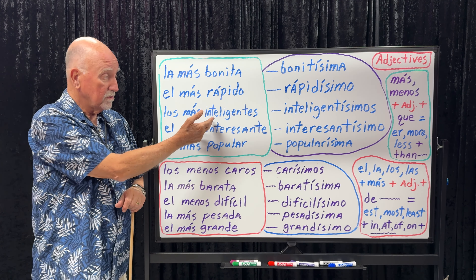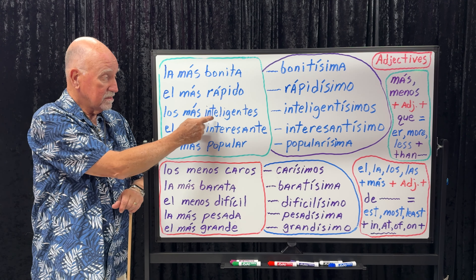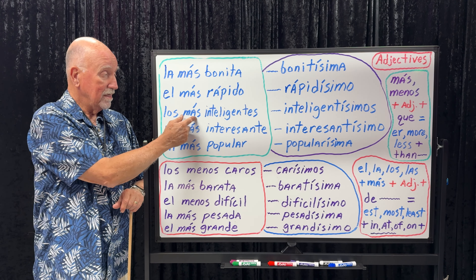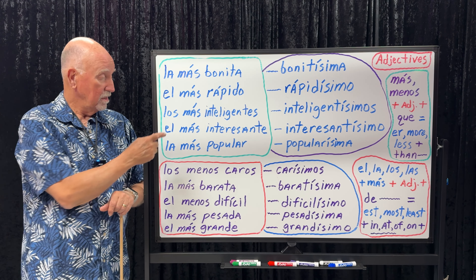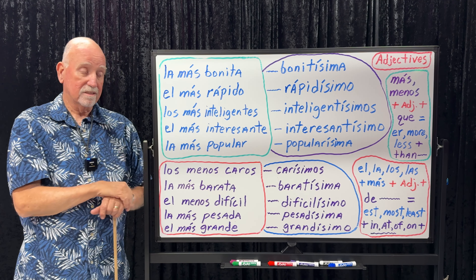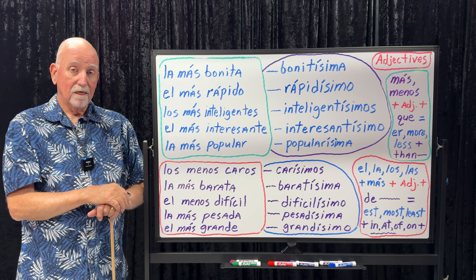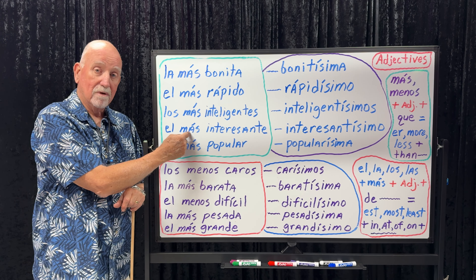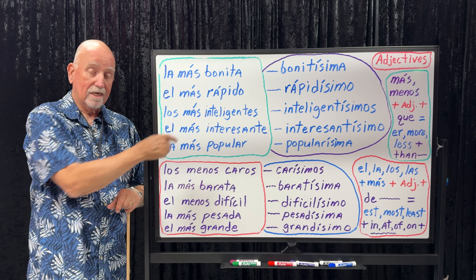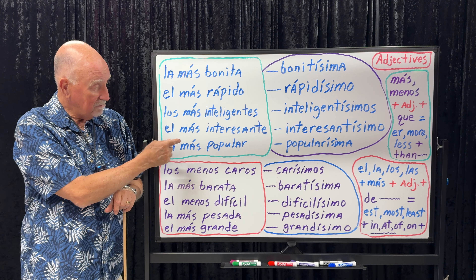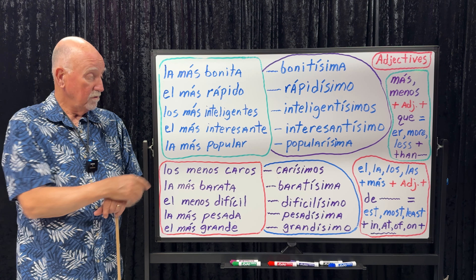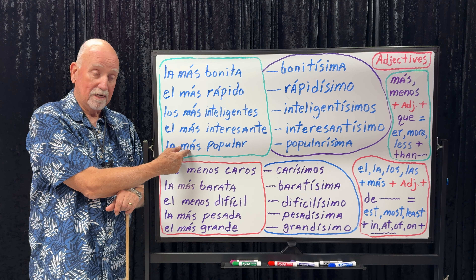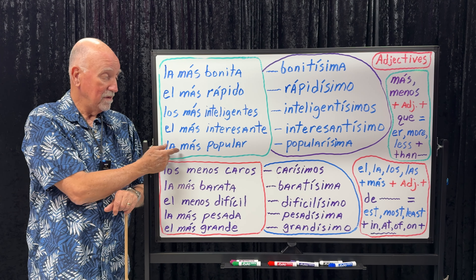If you want to say a group of people are smart: inteligentes. If you want to say they're smarter than somebody else: más inteligentes. If you want to say they're the smartest: los más inteligentes. El más interesante — something masculine is interesting; more interesting is más interesante; the most interesting is el más interesante. La más popular — the most popular. She's more popular than Mary: es más popular que María. And she is the most popular: es la más popular.